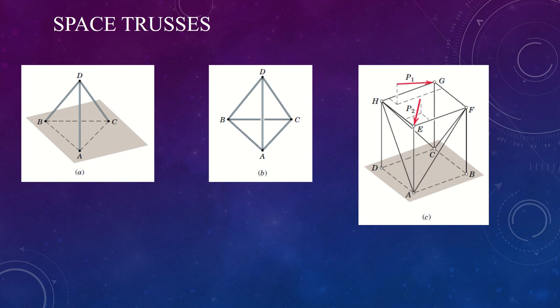For a new rigid unit to extend the structure, we need three additional concurrent bars whose ends are attached to fixed joints on the existing structure.